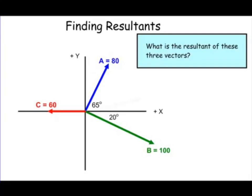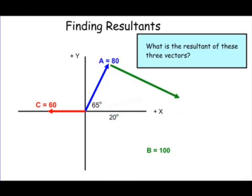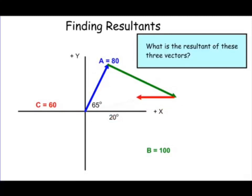With vectors a, b, and c, using the head-to-tail method, I can take vector b and move it so that its tail sits on the head of vector a. Then I can move vector c and place it head to tail with vector b. The resultant connects the beginning, or the tail of vector a, to the head of vector c — in other words, the beginning to the end.